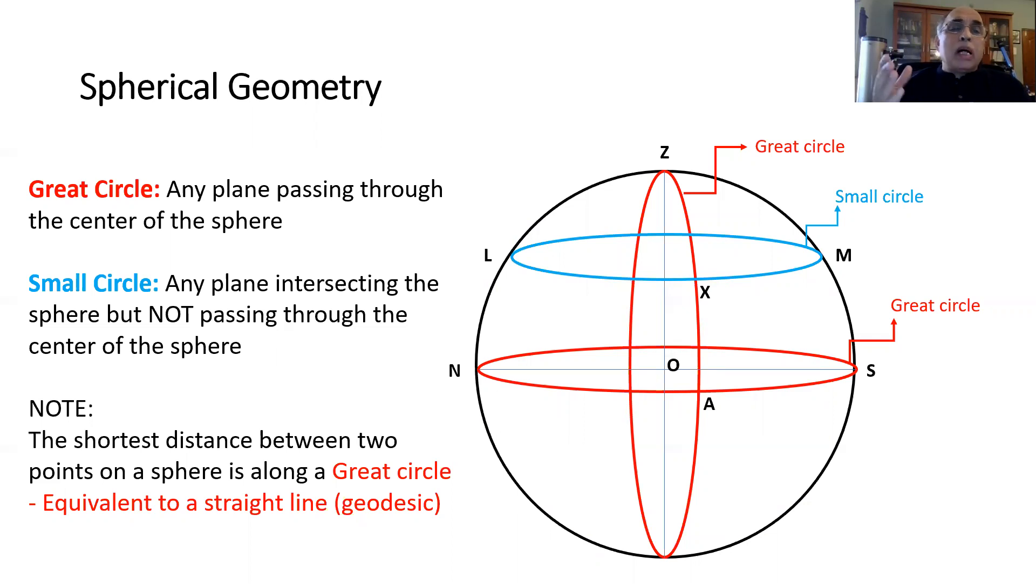Any plane which passes through the center of the sphere cuts the sphere in a great circle, and if it passes through the celestial sphere but not through the center, it makes small circles.